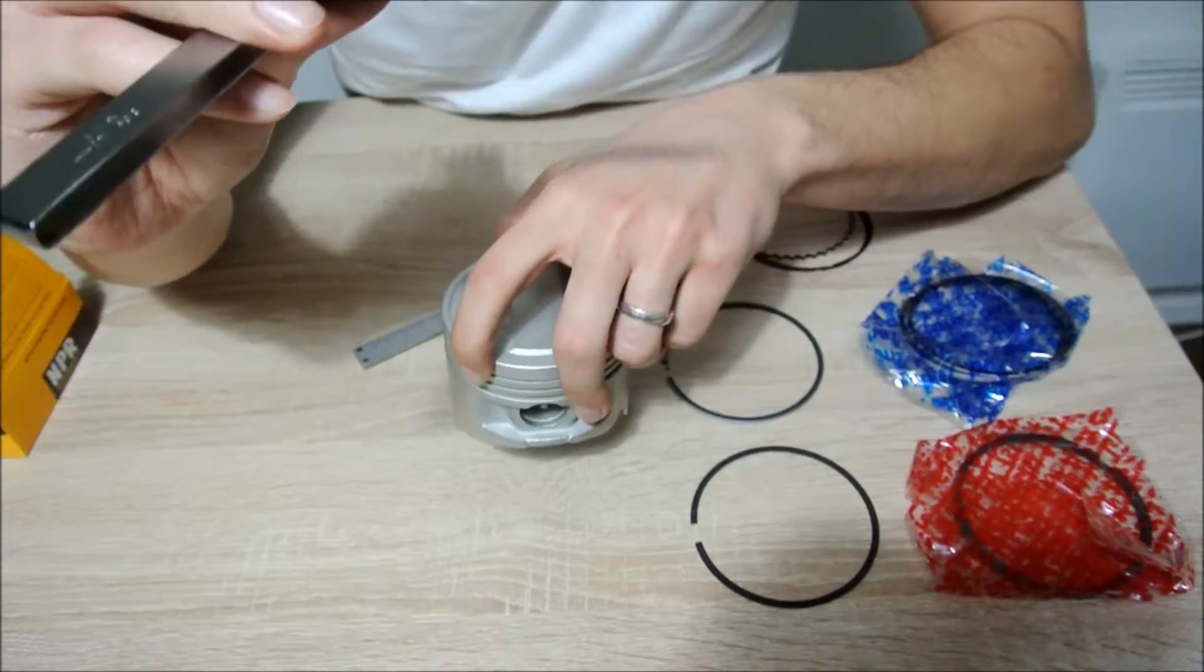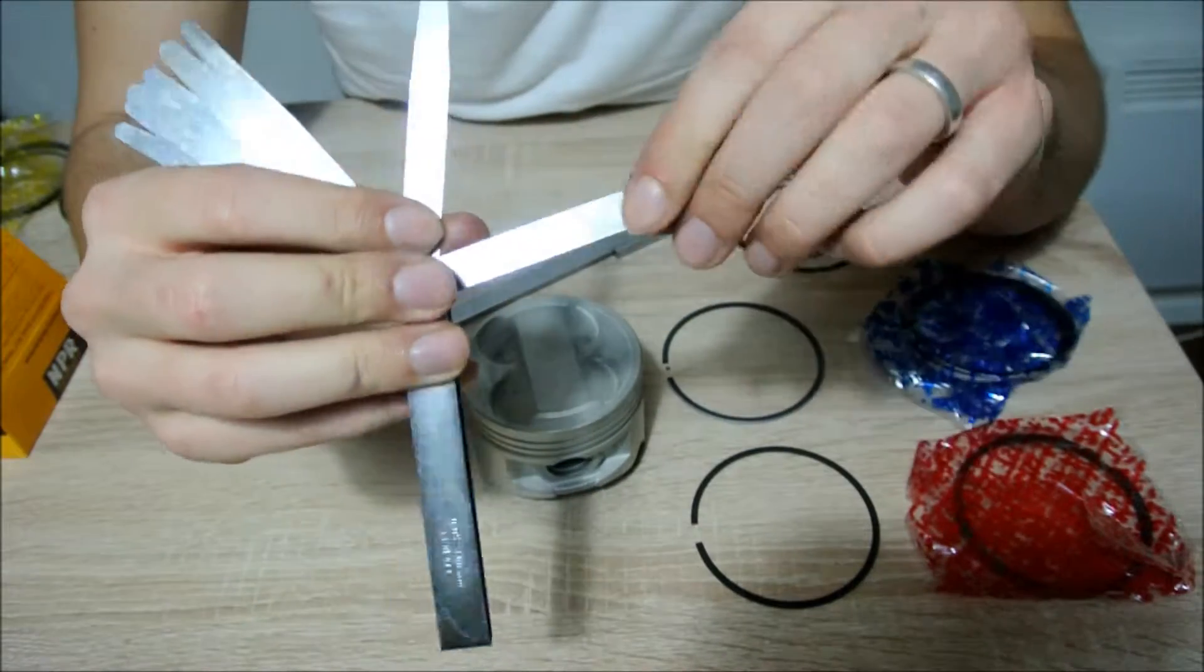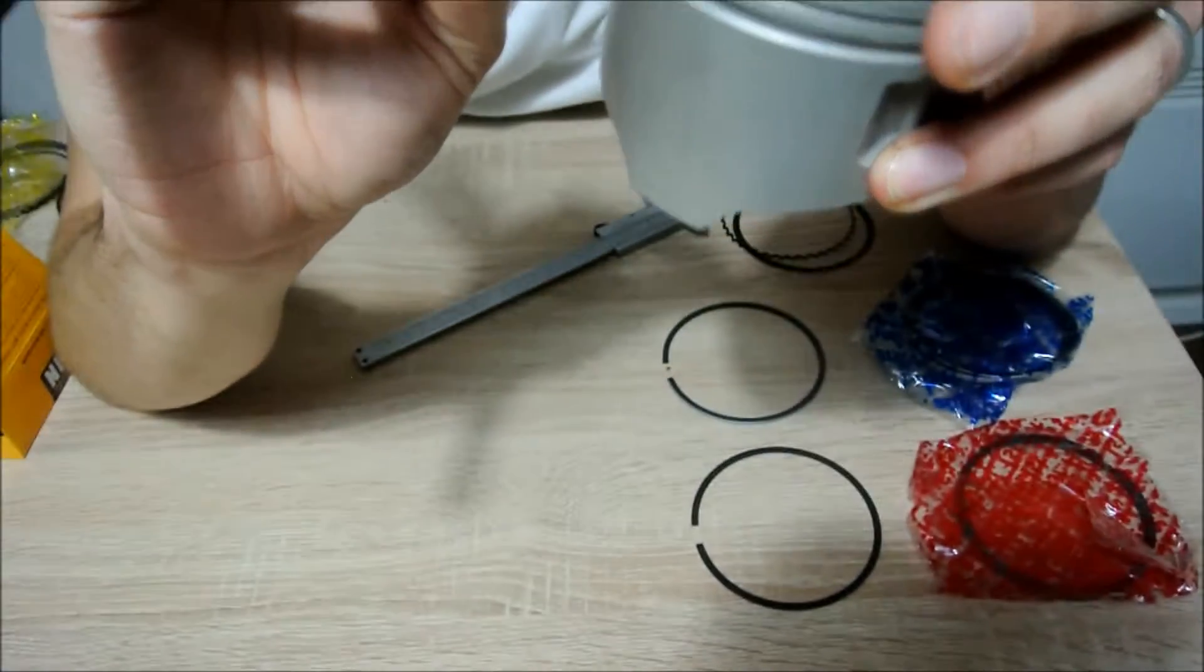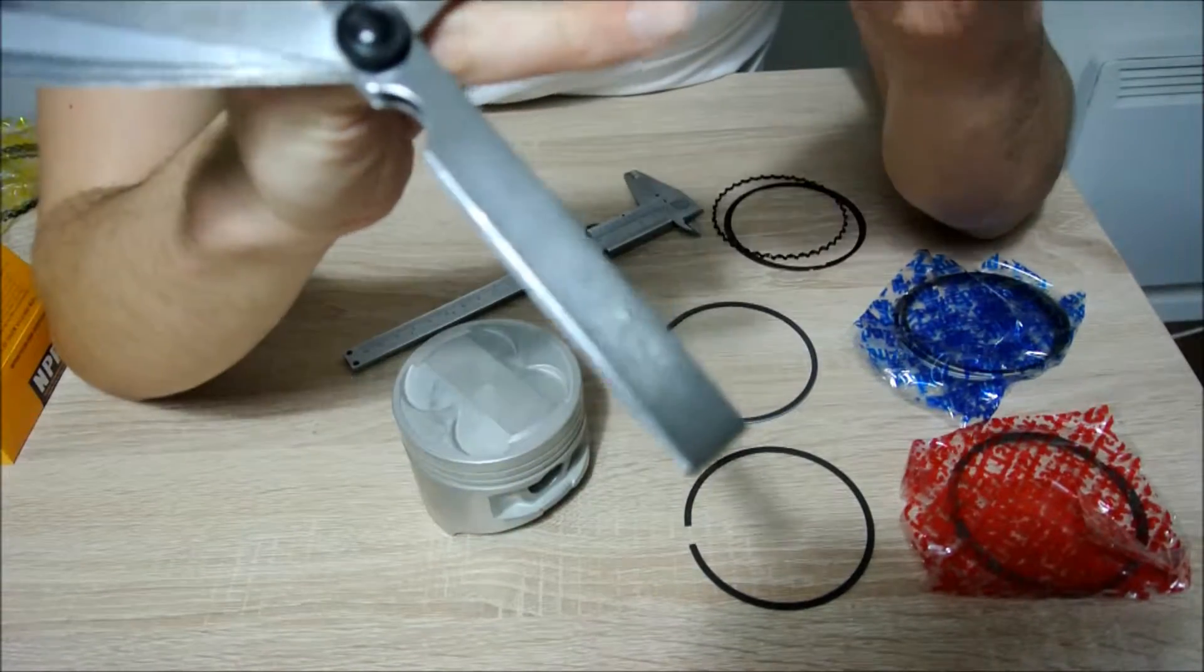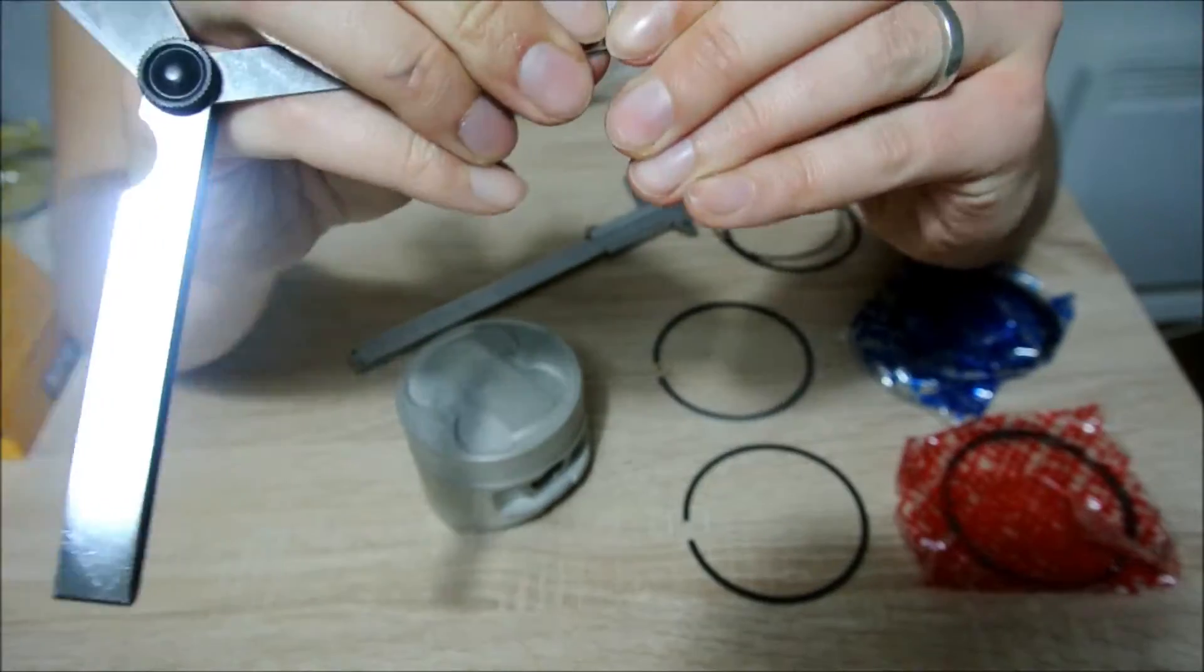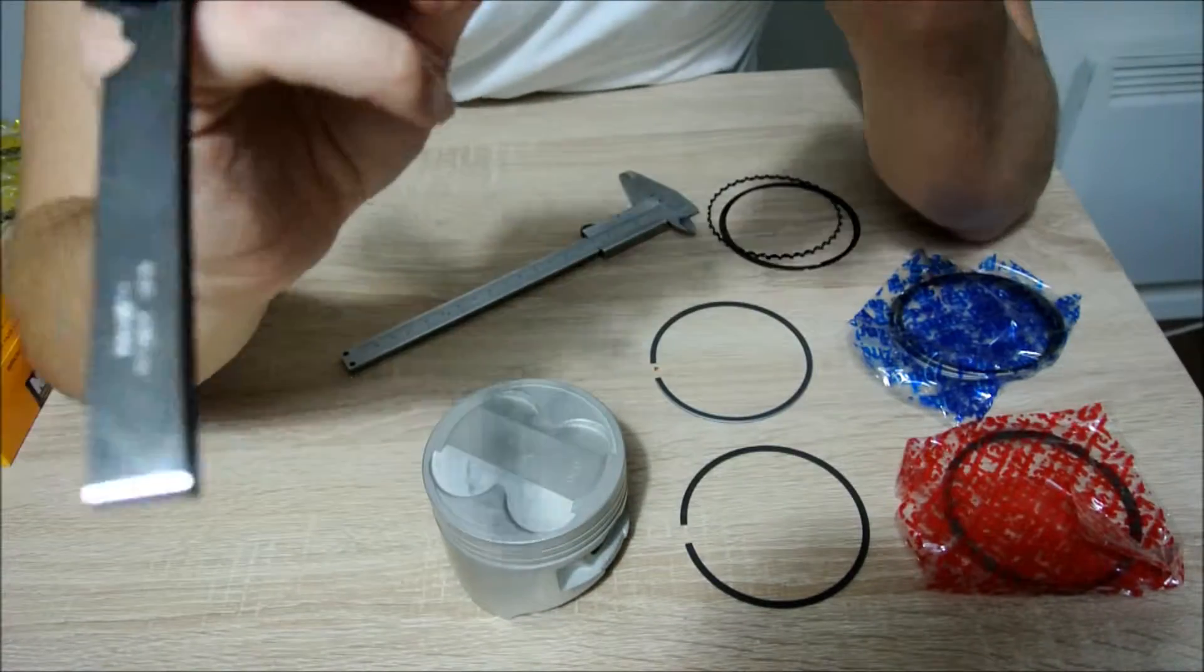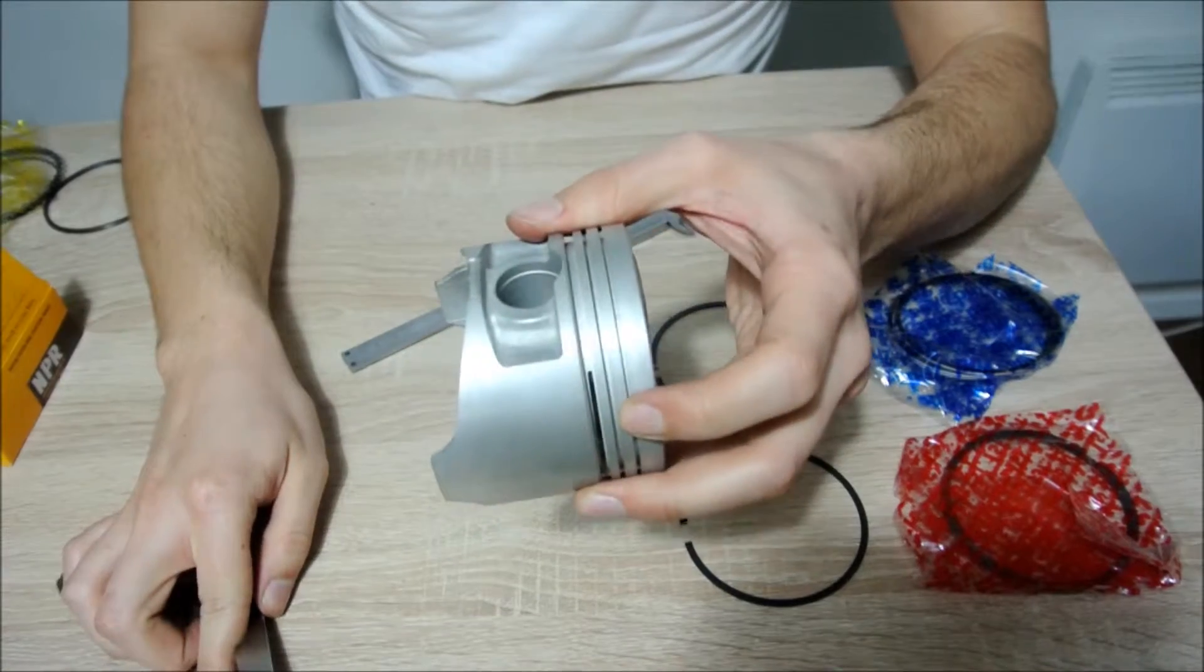For the first piston ring, I'm going to take a 1 millimeter blade and a 0.2 millimeter blade, which is 1.2 millimeter total. I'm going to fit them into the first piston ring groove. As you can see they fit just enough. To prove this is an exact measurement, I'll take a 0.05 millimeter leaf and put it together with the 1.5 millimeter leaf, but it cannot fit. So the first piston ring groove is 1.2 millimeters.